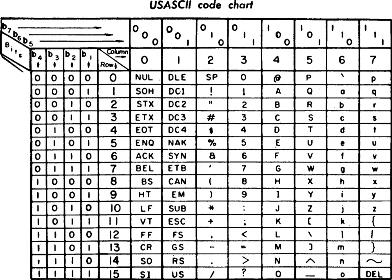ISO/IEC 4873 introduced 32 additional control codes defined in the 80–9F hexadecimal range, as part of extending the 7-bit ASCII encoding to become an 8-bit system.